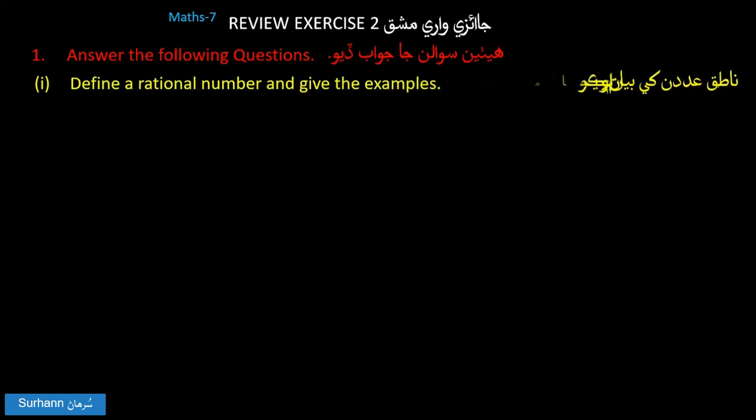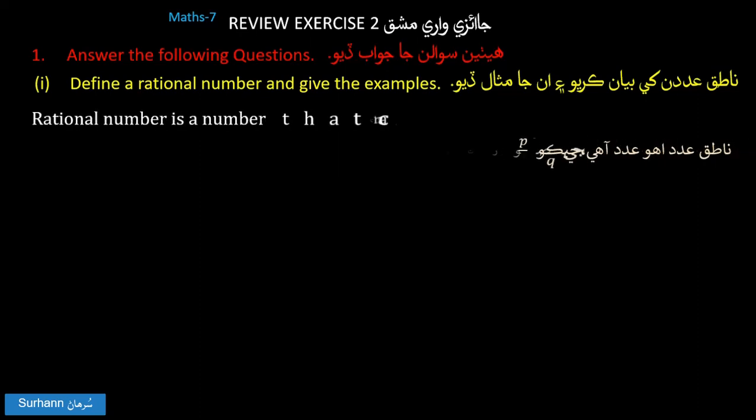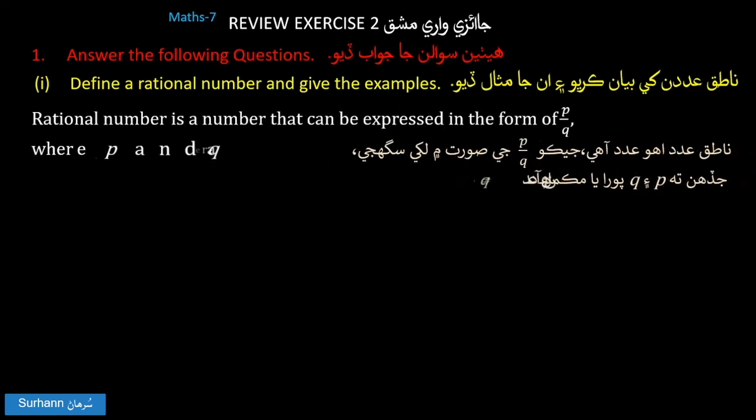Define a rational number. A rational number is a number that can be expressed in the form of P upon Q, where P and Q are integers and Q is not equal to 0.